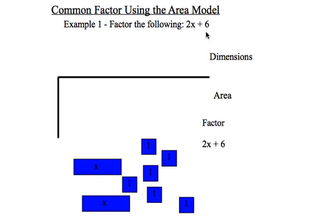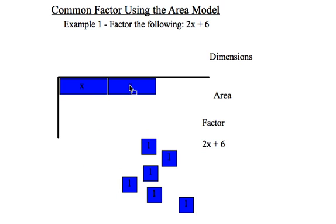I would like to factor 2x plus 6. So I've put all of those algae tile pieces out here, and now I need to try and arrange them into a rectangle that I can determine the dimensions of. So if I start with the larger pieces, I could put these in contact like this, and that would be acceptable.